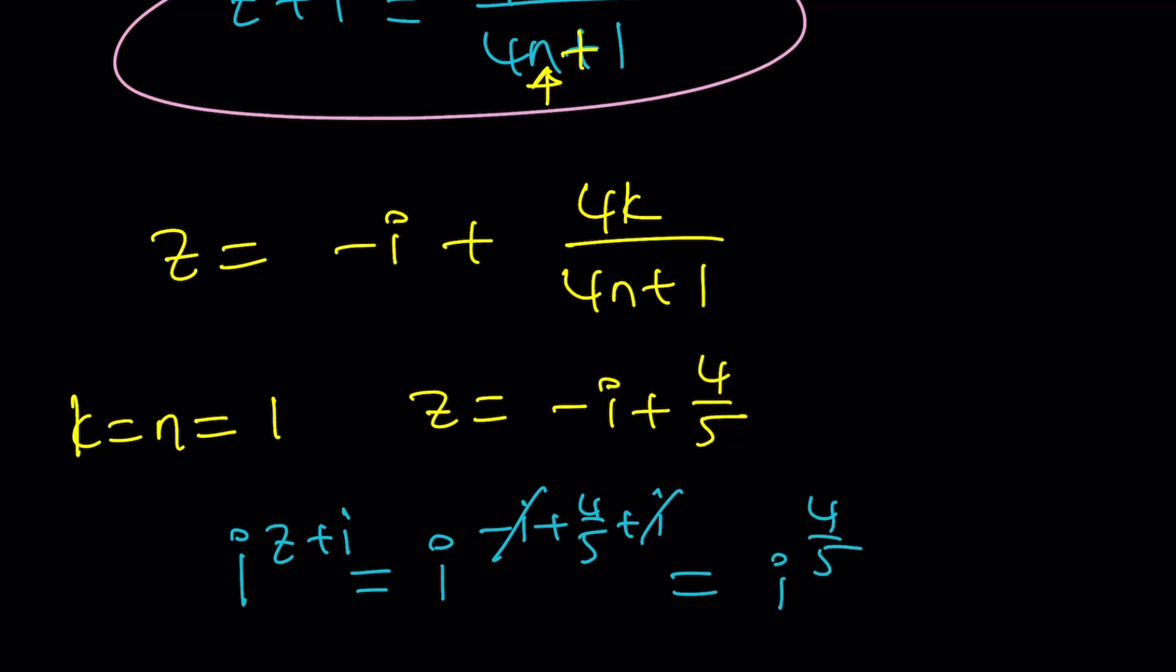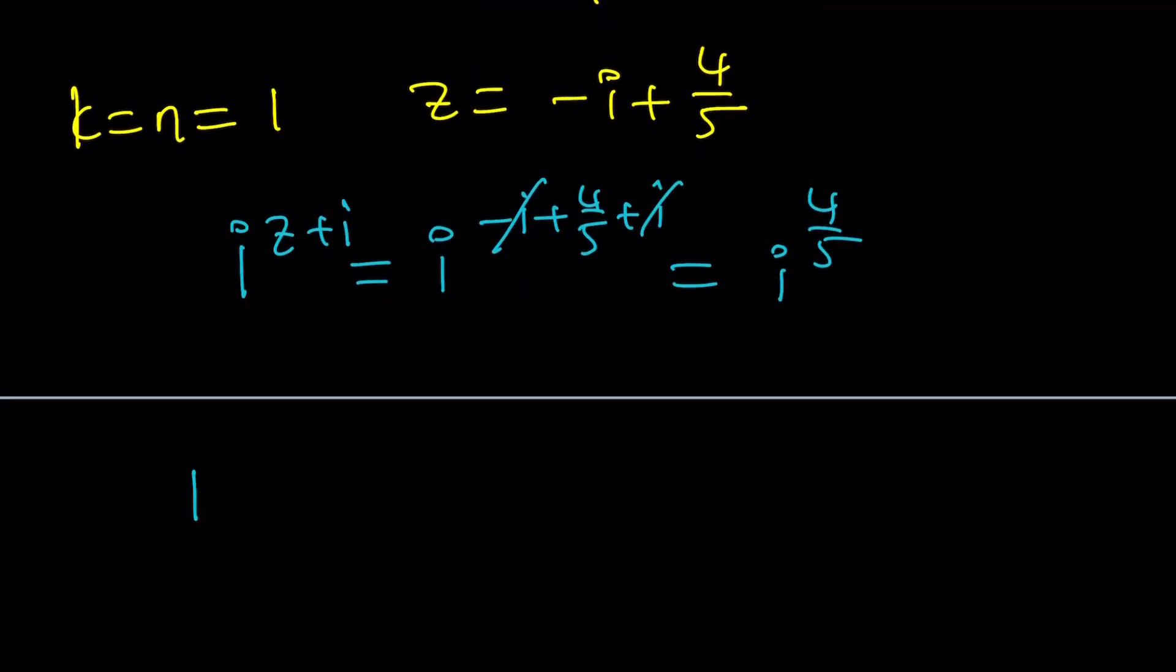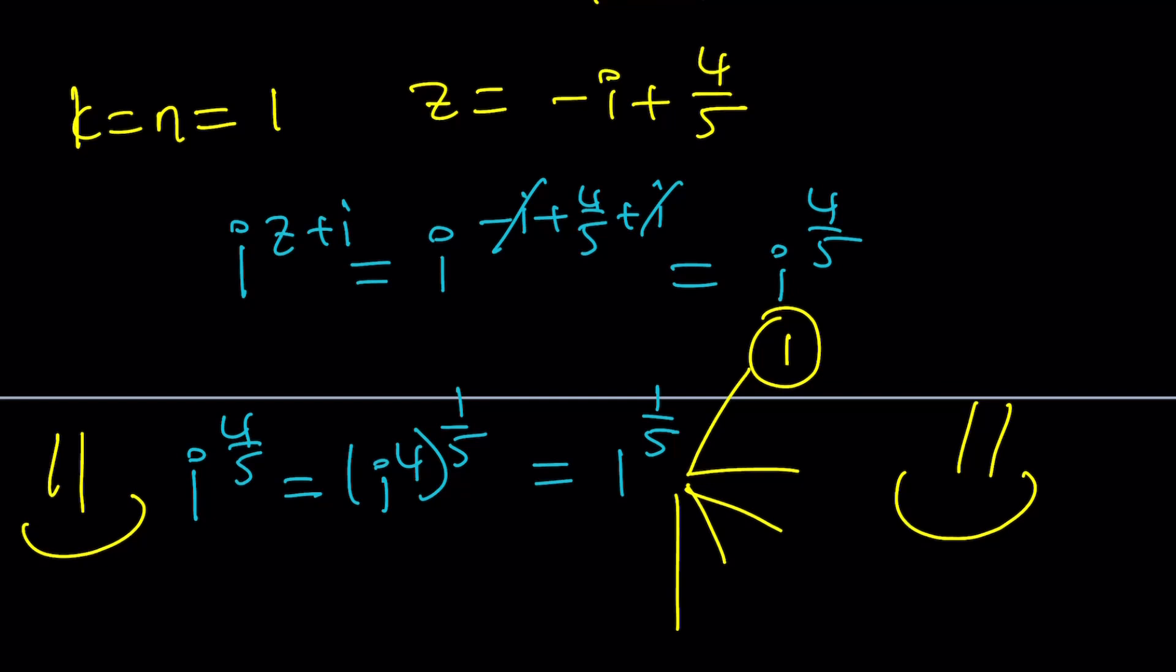Here's what we're going to do. i to the power 4/5, because four and five are relatively prime which is good, I can write this as i to the fourth to the power one fifth. i to the fourth is one so this is one to the power one fifth, which means the fifth roots of unity, the complex roots of unity. There are five possible values. Guess what? One of them is one and that's the one we can go by. But it's kind of ambiguous isn't it? And this brings us to the end of this video.